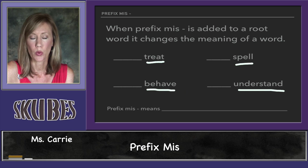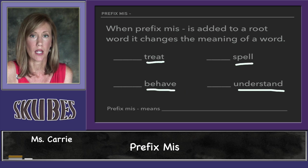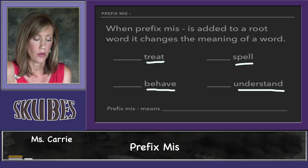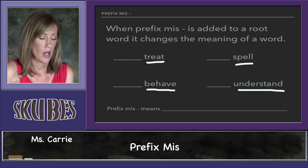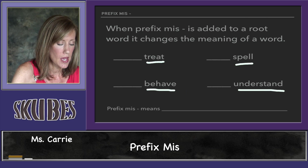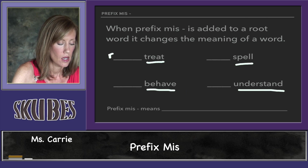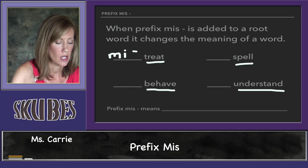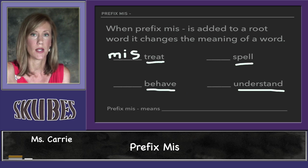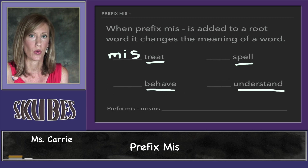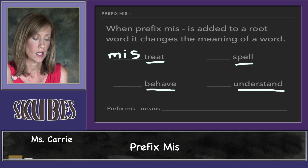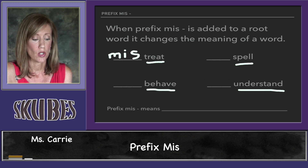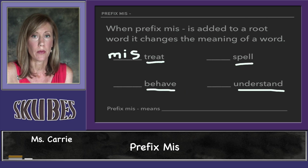A root word is a word that can stand by itself. Now if we put the prefix 'mis' in front of the word 'treat,' it changes the meaning of the word 'treat,' so 'mistreat' would mean to treat somebody wrong or treat somebody incorrectly.